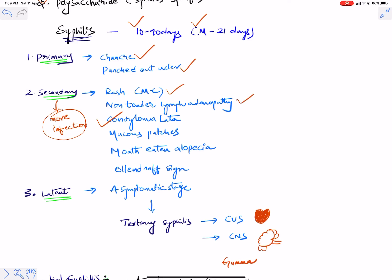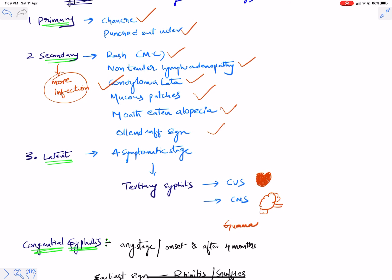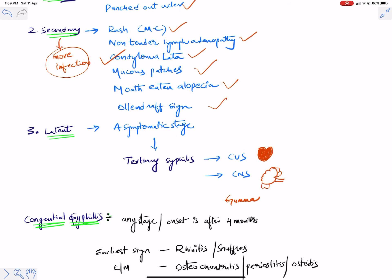In secondary syphilis: rash is the most common sign, non-tender lymphadenopathy similar to primary, condyloma lata, mucous patches are all seen. The latent state is mostly asymptomatic and difficult to diagnose. The latent state may convert to tertiary syphilis. Tertiary syphilis mainly involves the CVS and CNS — any CVS or CNS manifestations suggest tertiary syphilis.